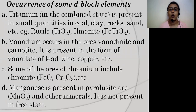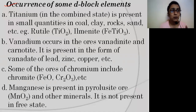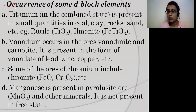Now, the occurrence of D-block elements. D-block elements can be found in free state as well as in combined state. Free state means they can be found in pure state. Combined state means they are found combined with something — like an oxide or a sulfide ore. For example, titanium is found in combined state, in the form of oxide ores, meaning the metal is combined with oxygen. It is also present in coal, clay, rocks, sand, etc.